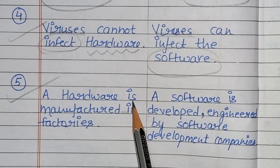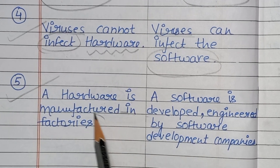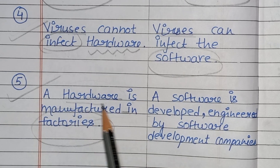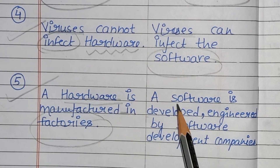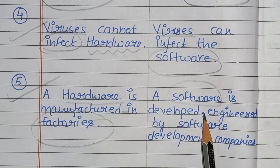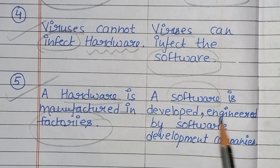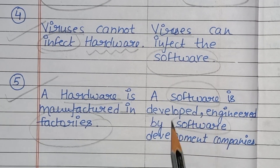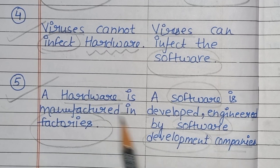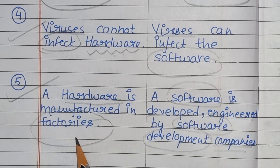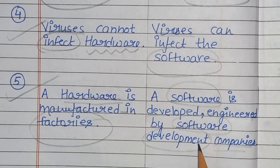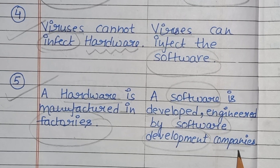Next difference: hardware is manufactured in factories. Toh hardware jo hai, woh manufactured kiya jata hai factories mein. Or jo software hai, woh developed kiya jata hai, engineered kiya jata hai by software development companies. Hardware is manufactured in factories; software is developed by software development companies.